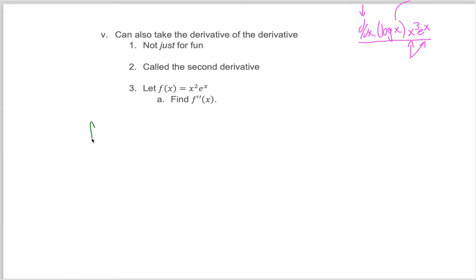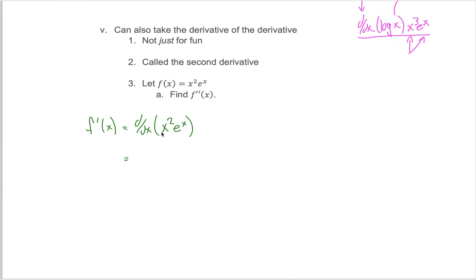Well, first I'd have to figure out f prime of x, the first derivative of this function. The first derivative of this function would just be the derivative of x squared e to the x. You'd recognize that you got something times something, so you've got to use the product rule. You might be good enough with the product rule that you can just figure this out in one line, but I'm going to write it in two lines. You take the derivative of the x squared,